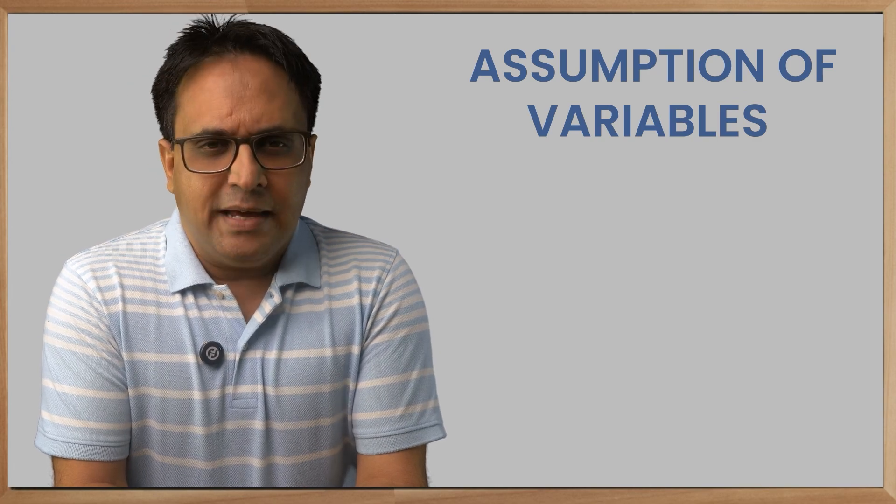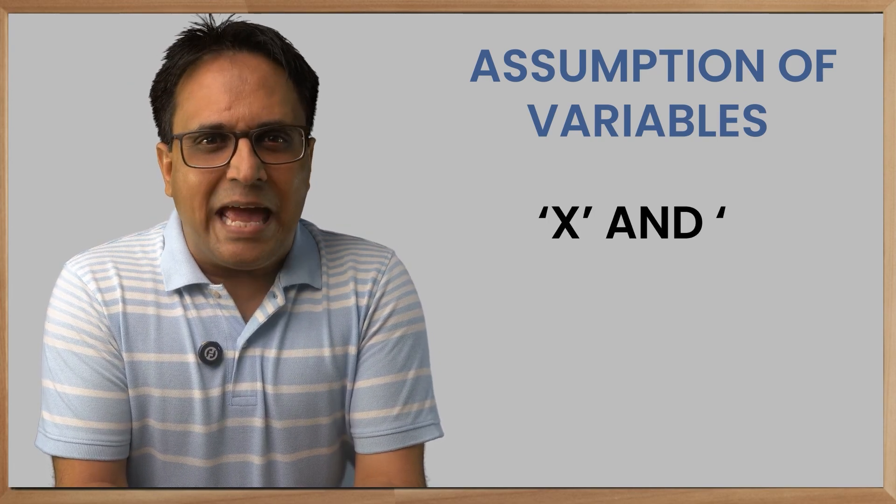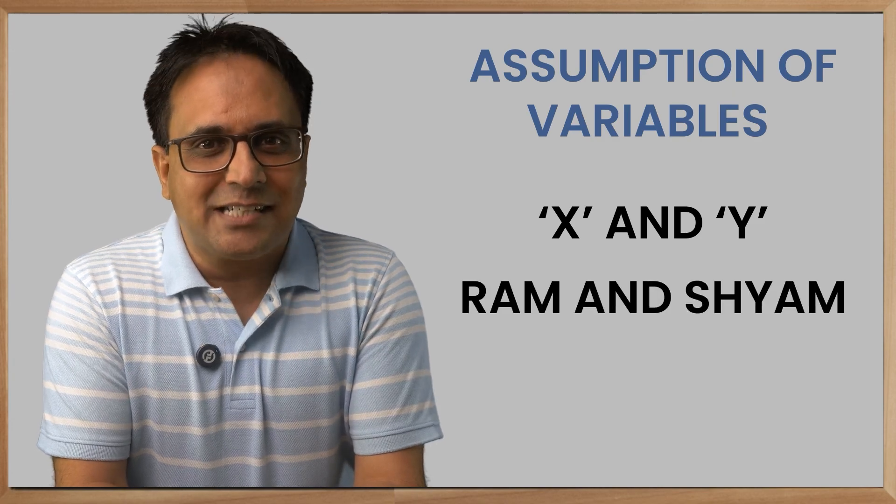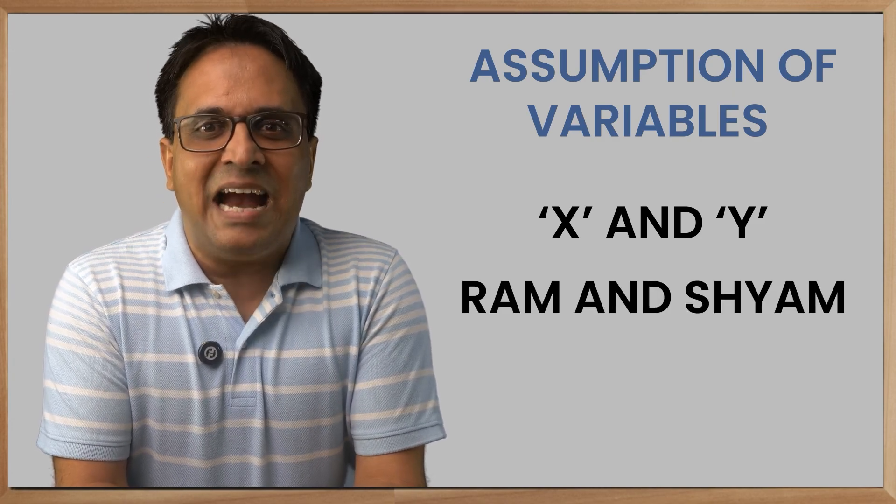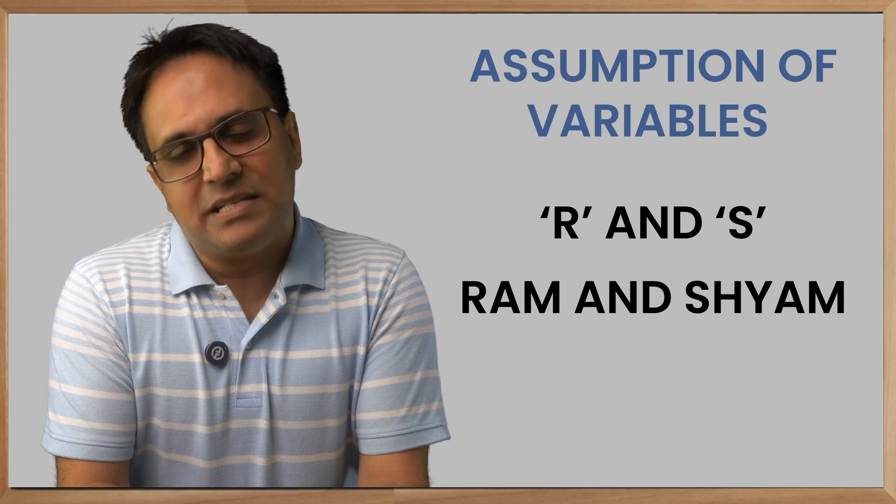For example, instead of assuming x and y in a question on the ages of Ram and Sham, we must have r and s as the variables respectively.